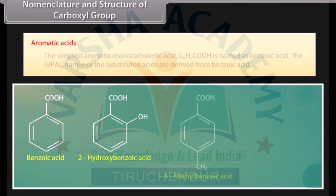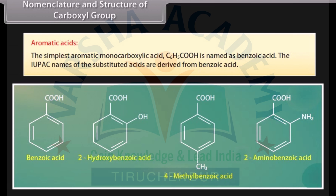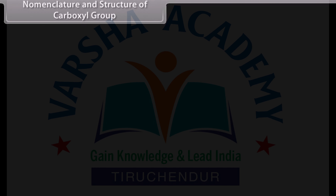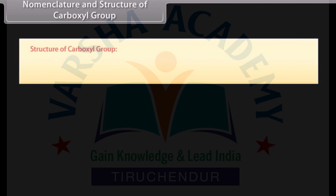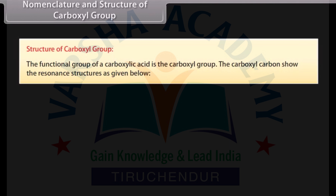The simplest aromatic monocarboxylic acid, C₆H₅COOH, is named as benzoic acid. The IUPAC names of substituted acids are derived from benzoic acid. The functional group of a carboxylic acid is the carboxyl group, and the carboxyl carbon shows resonance structures.